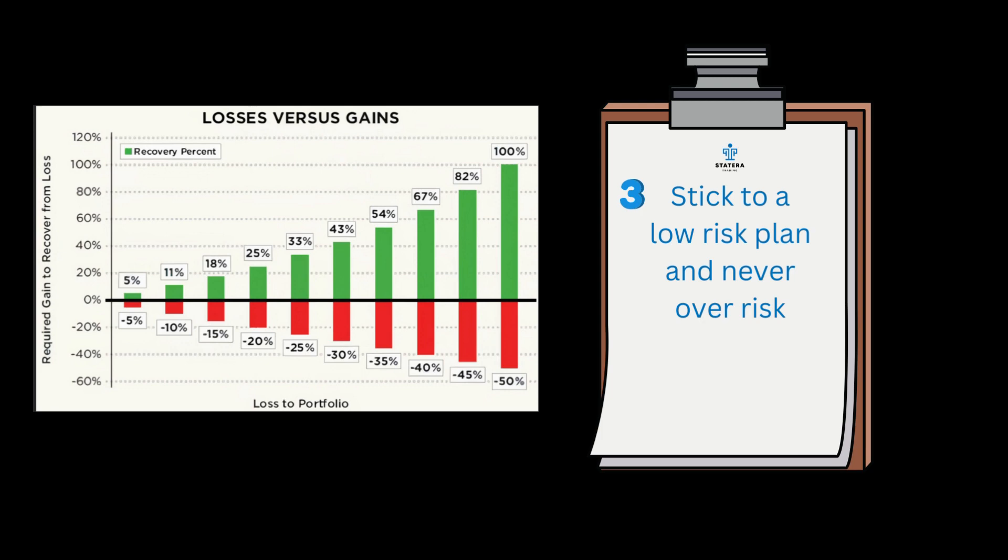Say we were down 30% risking 2% per trade — to get back that 30% you'd need to make a 43% gain. The difference gets larger and larger the more drawdown we go into. So if we risk more, we can expect bigger drawdowns, which means we need to make far more to get back to zero. This is why we risk 0.3% per trade, and within our algorithm it keeps our drawdown between 10 and 11%, meaning we need to gain almost the exact same as what we've lost to get back to zero. We don't want too much volatility between the highs and lows of our equity chart.